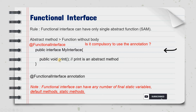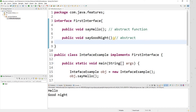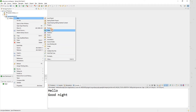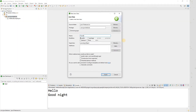Apart from having an abstract method, a functional interface can also have any number of static variables, default methods, and static methods as well. Let me open the IDE and give you some examples. I'm going to create a new class called FunctionalInterfaceExample.